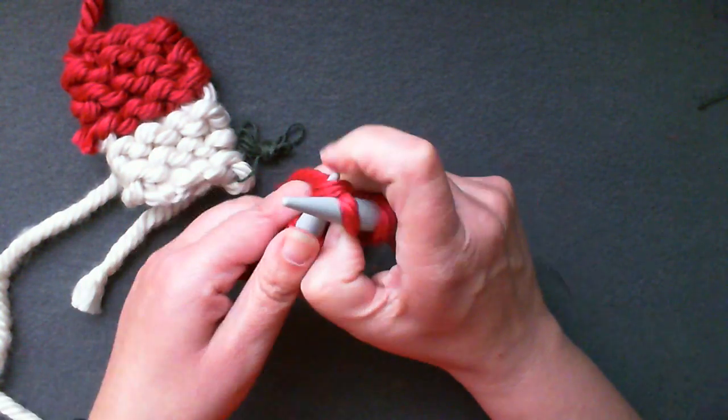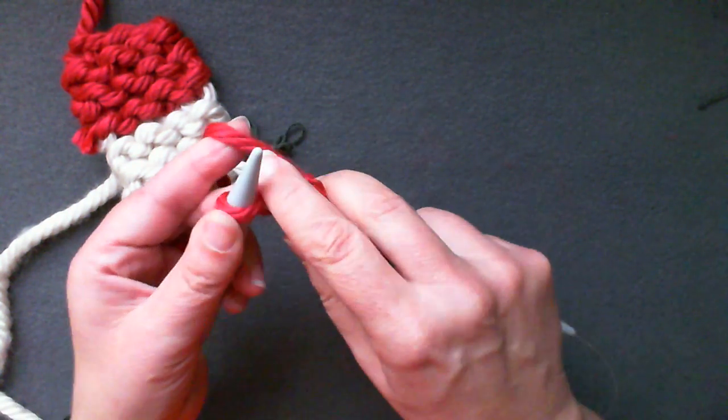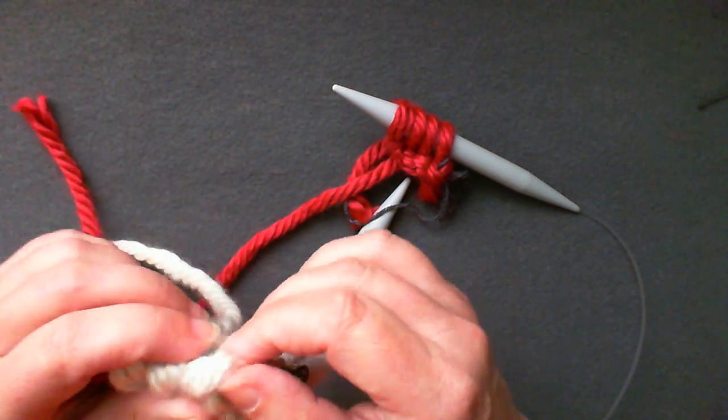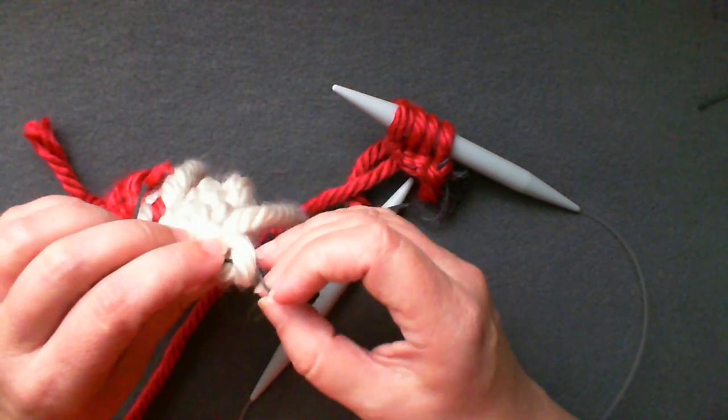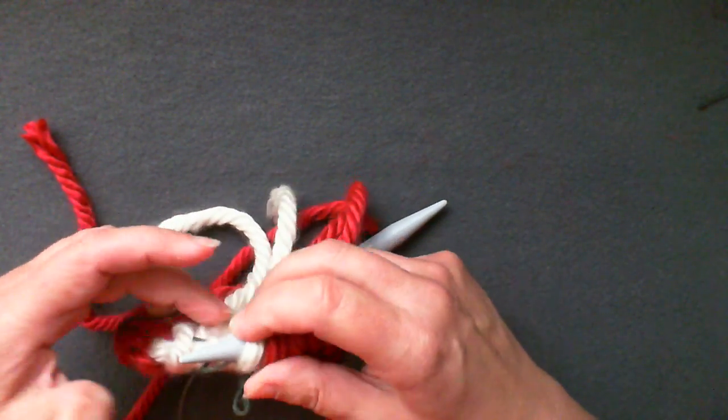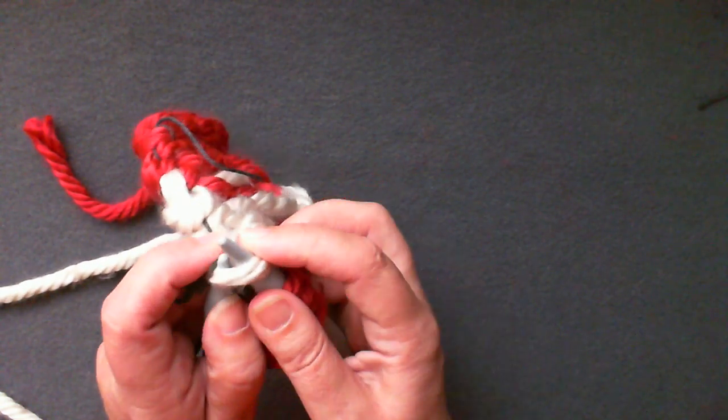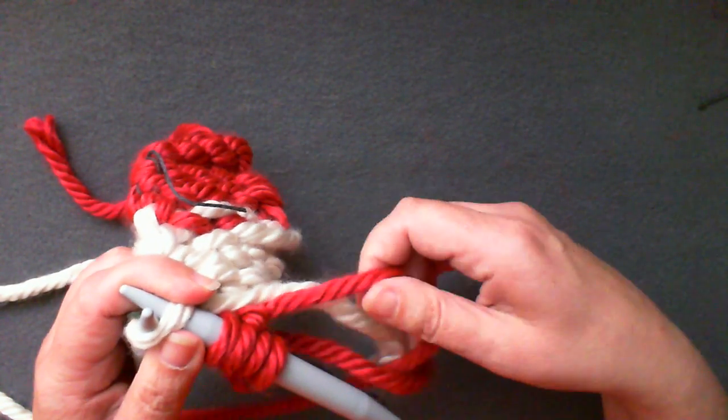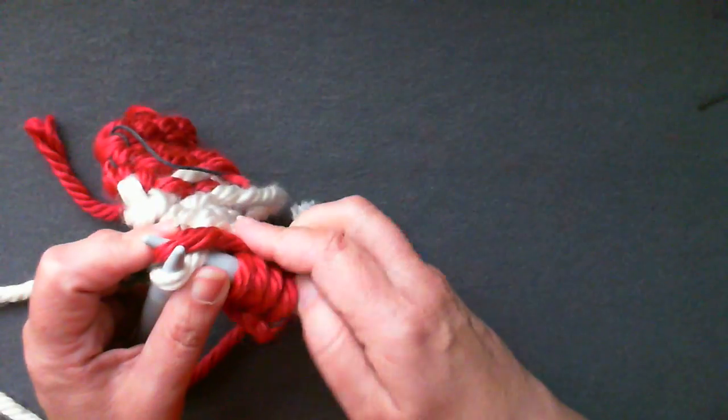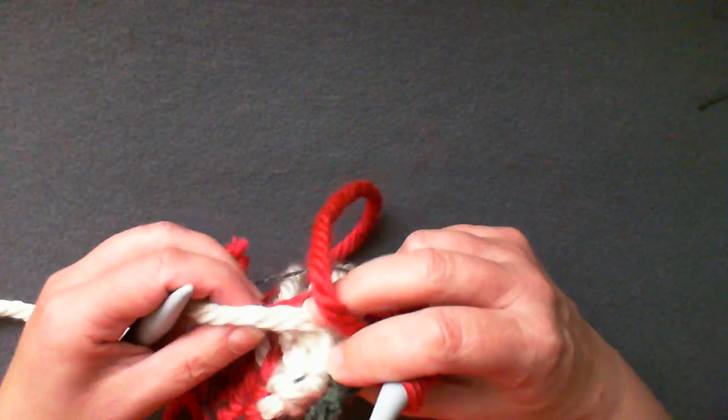Do not work the last stitch, but slip it, knit-wise, onto the right needle. Now is where that waste yarn will come in handy. On your finished strip, find that first stitch where the waste yarn was draped and go into that. Knit through that stitch and then pass the slip stitch over that stitch.